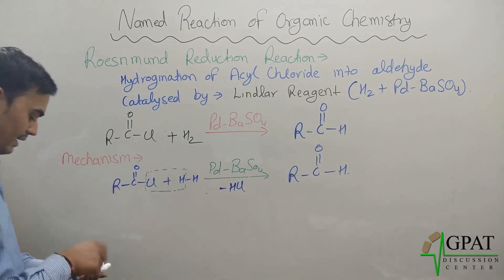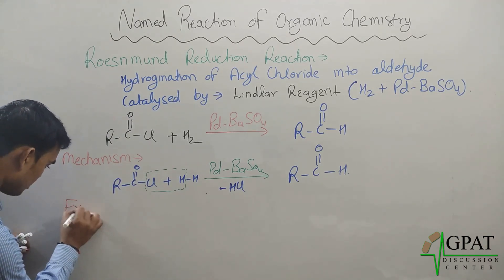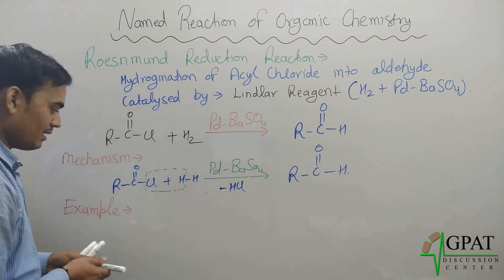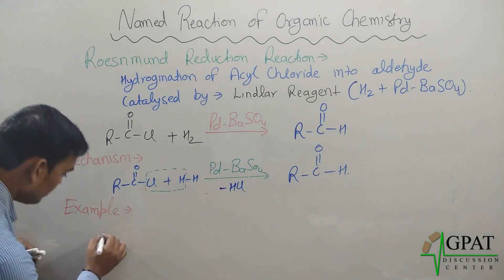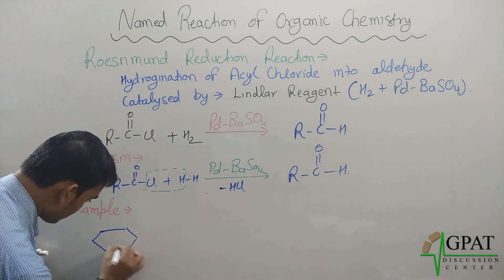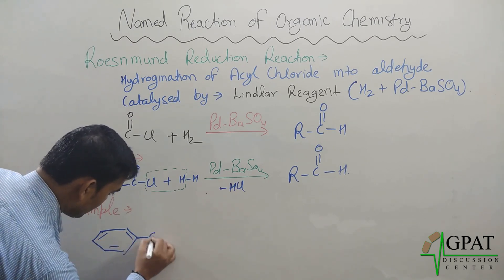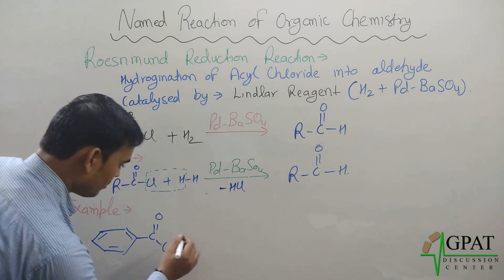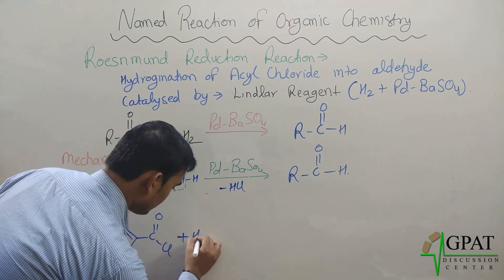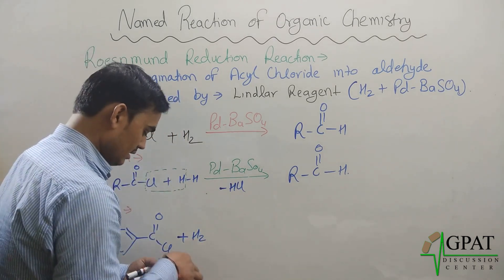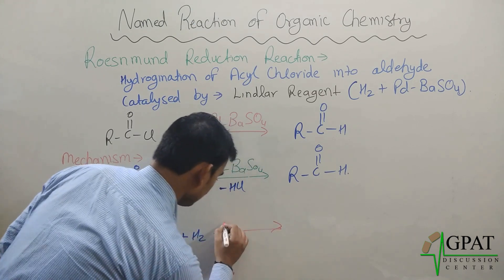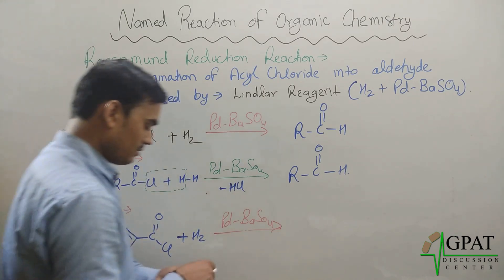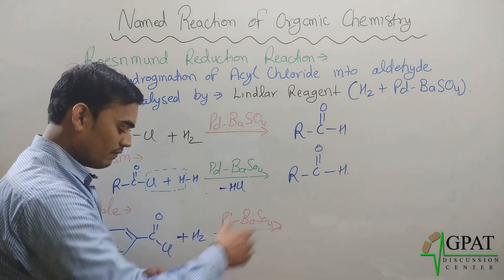If I take an example, suppose this is your benzene ring with an acyl chloride group. When hydrogen gas is passed over here in the presence of Lindlar reagent, palladium barium sulfate, benzaldehyde will be our product.